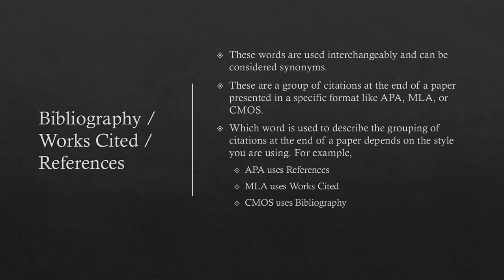Bibliography, works cited, and references are words used interchangeably and can be considered synonyms. These are a group of citations at the end of a paper presented in a specific format like APA, MLA, or CMOS. The word used depends on the style you are using.